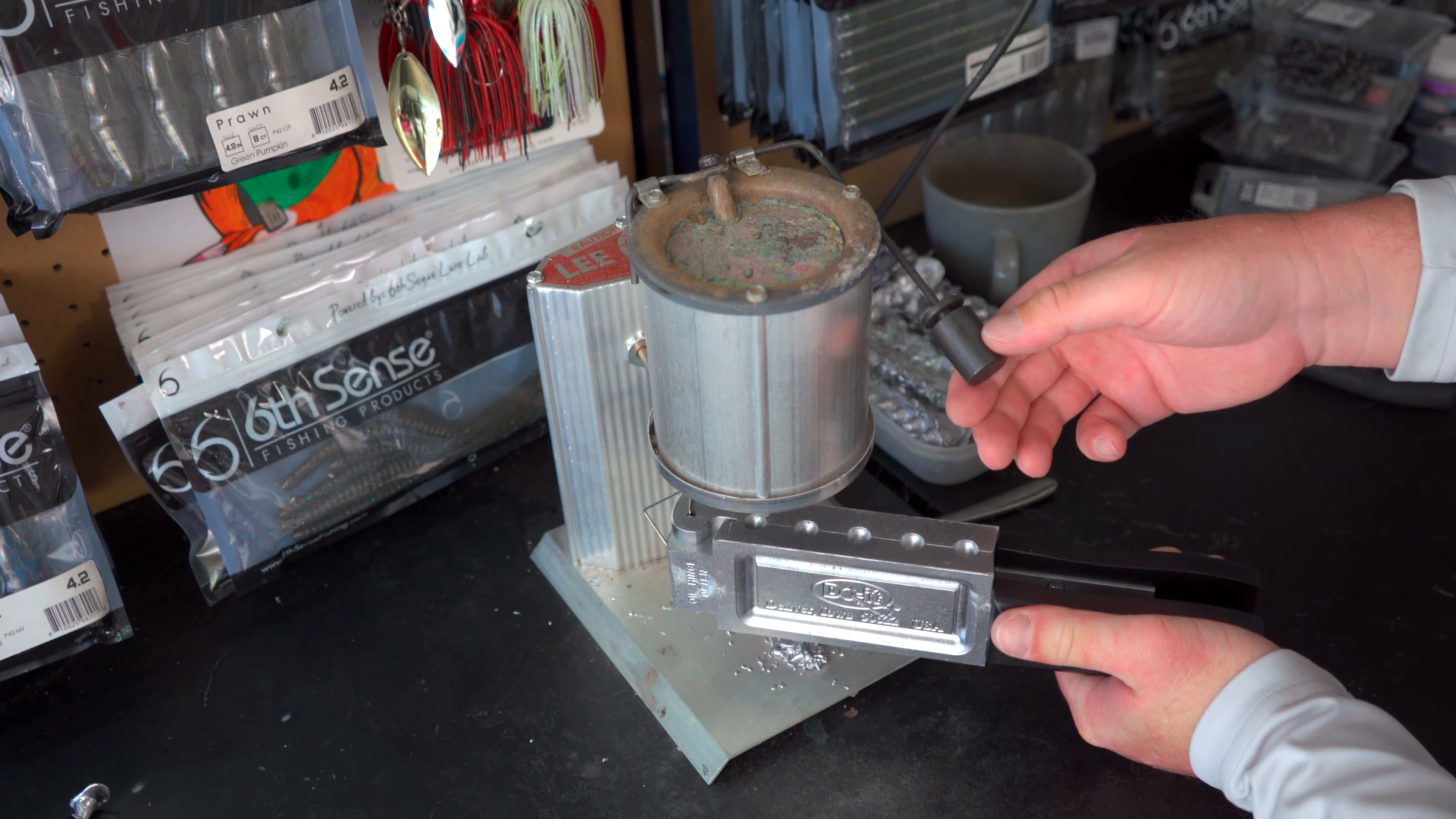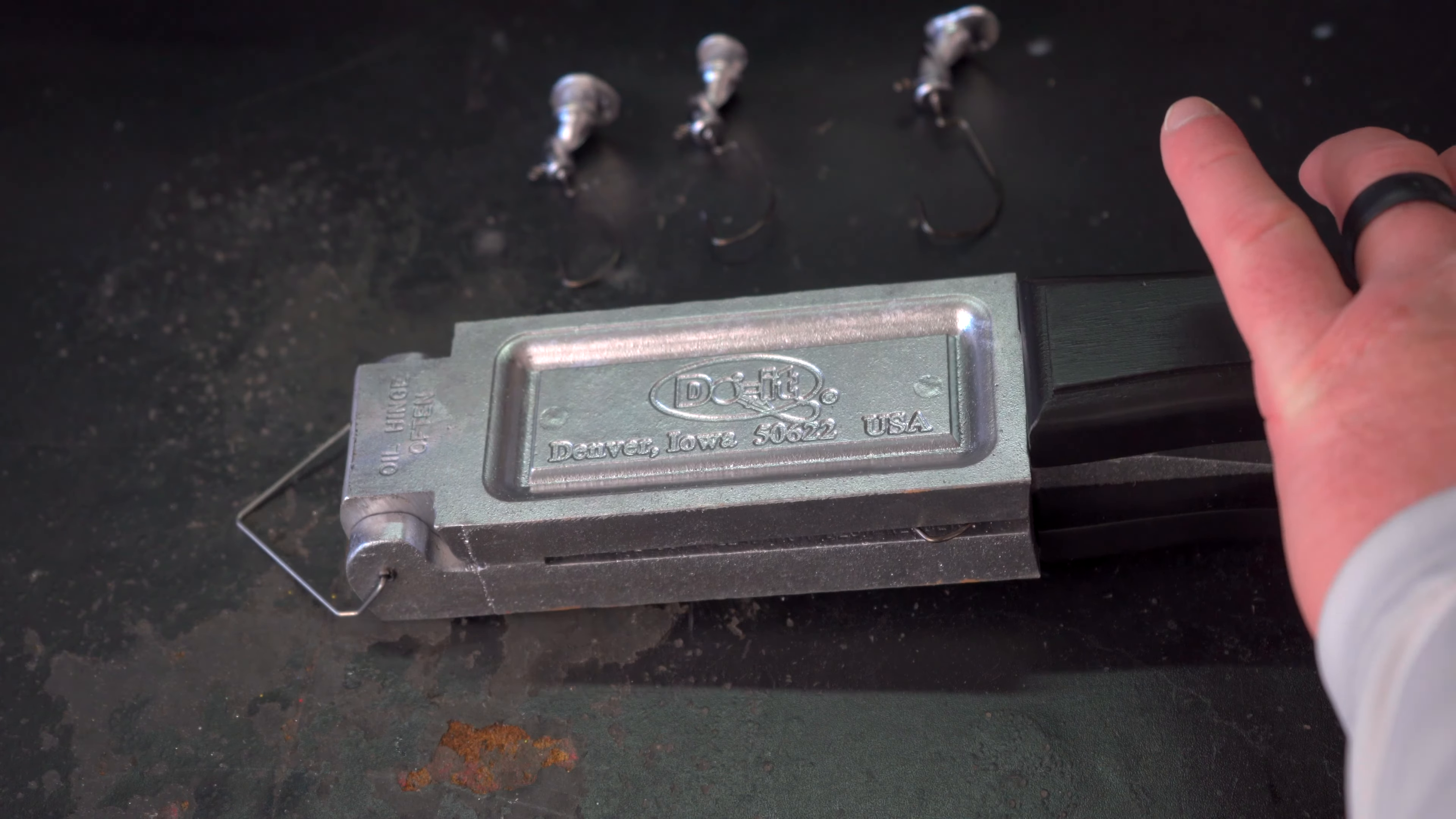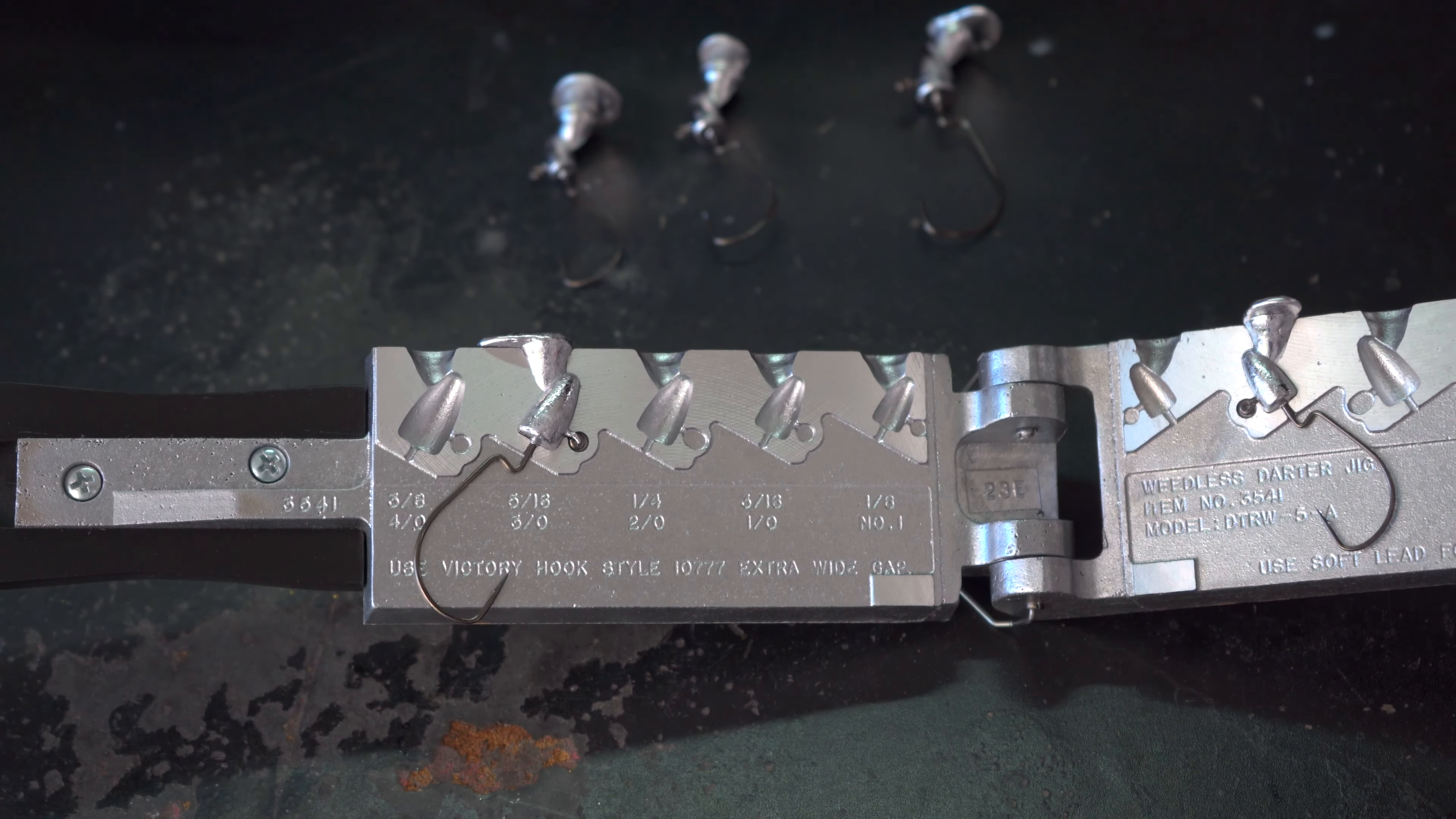Take the mold. Fill up one port. Fill up the next port. Now we'll check everything out. Now it's time to open up the mold. Check out our weedless darter jigs. That three-sixteenth looks really good and that five-sixteenth looks really good. Just going to need a little bit of trimming right there, but nothing bad at all.